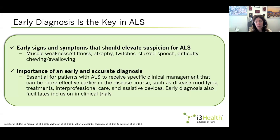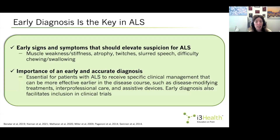The problem with misdiagnosis is that people living with ALS may have delayed times to receiving specific clinical management. We have a very collaborative and active clinical and research community that has developed clinical management recommendations and research options. We want people living with ALS to be diagnosed as early as possible so they can receive specific clinical management when they are still earlier in the disease course, providing disease-modifying treatments, interprofessional care such as physical and speech therapy, and assistive devices to maximize quality of life and improve survival.